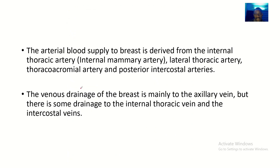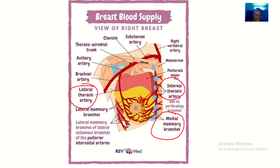The arterial blood supply to the breast is derived from the internal thoracic artery, also known as the internal mammary artery, the thoracoacromial artery, and the posterior intercostal arteries. The thoracoacromial trunk gives rise to the lateral thoracic artery. So to correct that: the blood supply to the breast is basically the lateral thoracic artery and the internal thoracic artery and its branches.